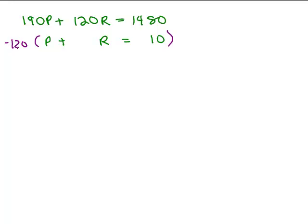So let's say I multiply both sides of this equation, P plus R equals 10 by negative 120. So I'm not going to do anything to the top equation, so I still have 190P plus 120R equals 1480. But in the bottom, I'm going to have negative 120P, negative 120R, and negative 1200.